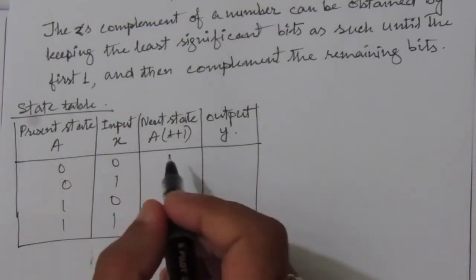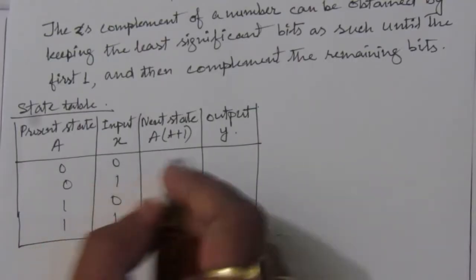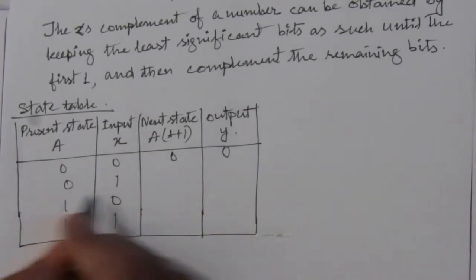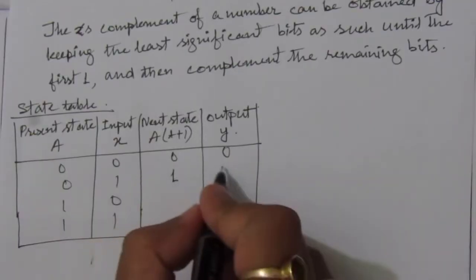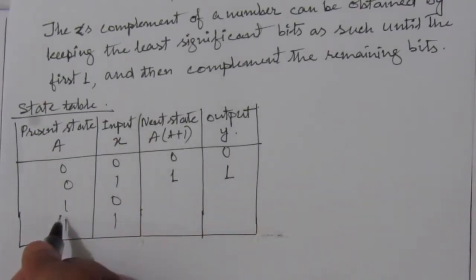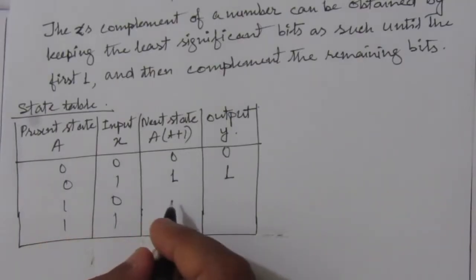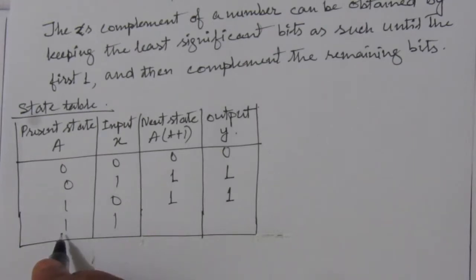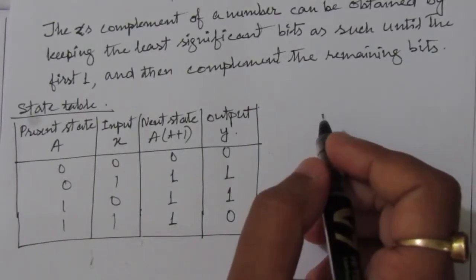When present state is 0 and input is 0, it will remain in state 0, so next state is 0 and output is 0. When present state is 0 and input is 1, next state will be 1 and output is also 1. When present state is 1 and input is 0, it will remain in state 1, so next state is 1 and output is 1. When present state is 1 and input is 1, next state is 1 and output is 0.